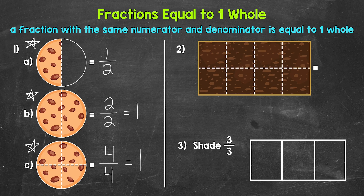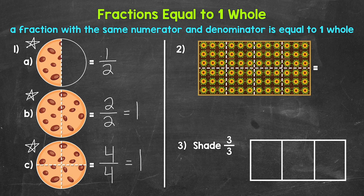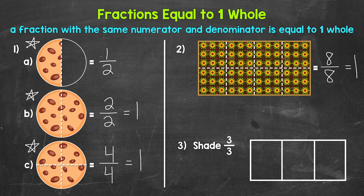Let's move on to number two, where we have an empty garden divided into eight equal parts. We're going to plant some flowers and write a fraction to represent the part of the garden with flowers. All eight parts are filled with flowers, so eight is our denominator and eight is our numerator — eight eighths. This fraction equals one whole garden.